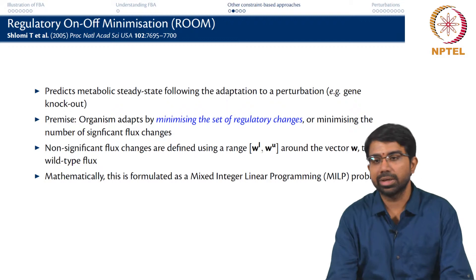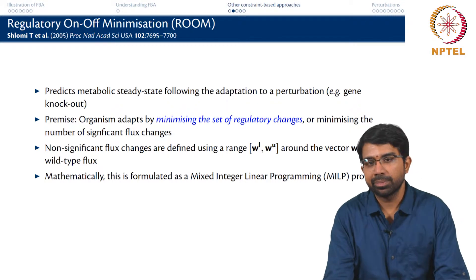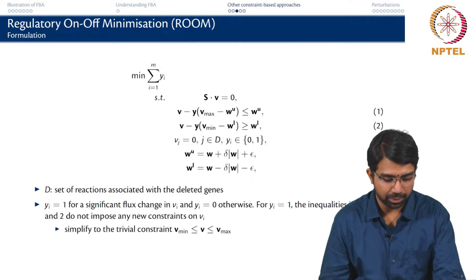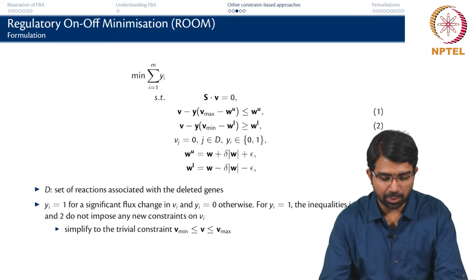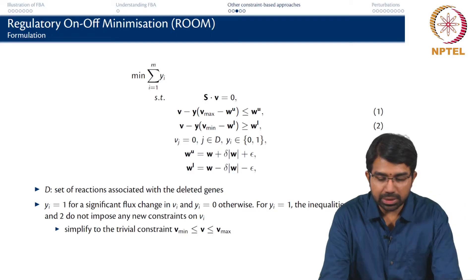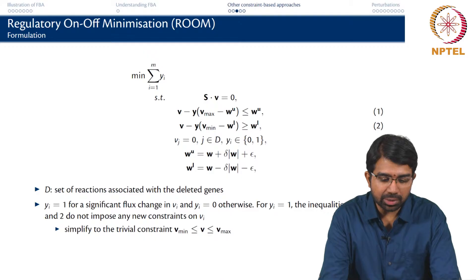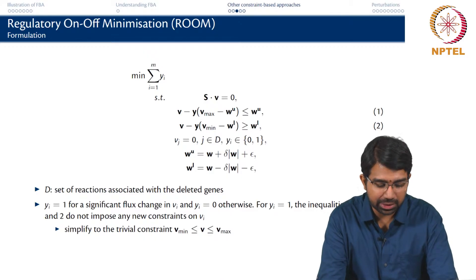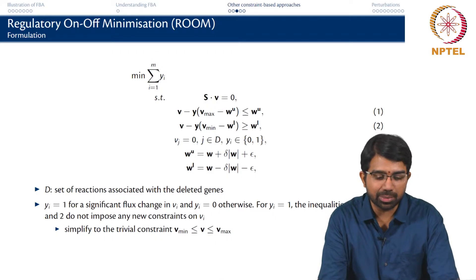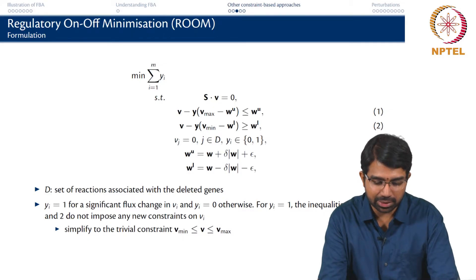The number of 5% or 10% changes will be minimized. Mathematically this becomes an MILP problem — a mixed integer linear programming problem. In this formulation, we are trying to minimize the number of significant flux changes, proxied by another variable yi, and you are minimizing that.